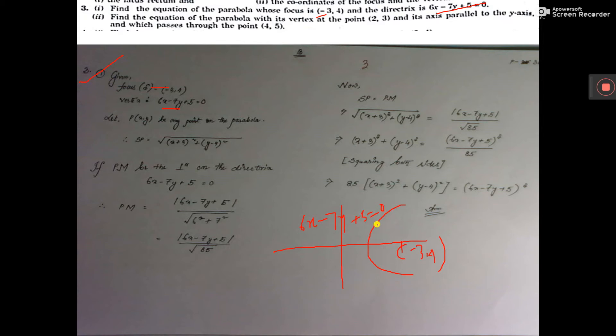Now I told you sp = pm. So this is point P(x, y). This is sp = pm.